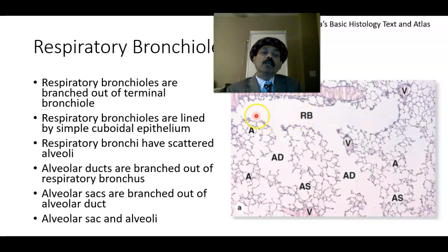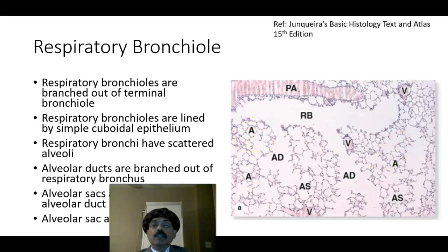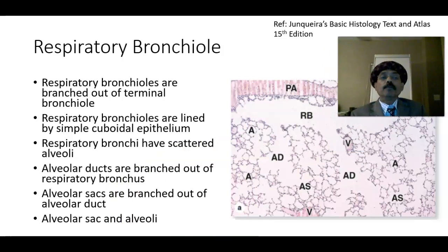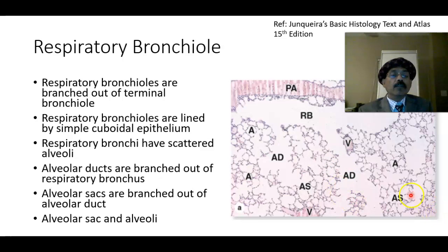Respiratory bronchioles come out of the terminal bronchioles. From the respiratory bronchioles we then get the alveolar duct, alveolar sac, and alveoli. Respiratory bronchioles have scattered alveoli. The alveolar duct has an increased number of alveoli. The alveolar sac is a collection of alveoli — these pockets are the alveoli.